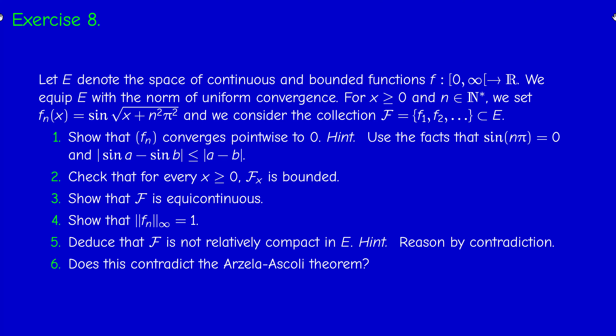We consider a sequence of elements in this set E defined by fₙ(x) = sin(√(x + n²π²)), and the collection F = {f₁, f₂, ...}. We have to show: (1) fₙ converges pointwise to zero; (2) F is pointwise bounded; (3) F is equicontinuous; (4) each fₙ belongs to the unit sphere of E; and finally, we have to deduce that F is not relatively compact in E, although it is pointwise bounded and equicontinuous, and explain why this does not contradict the Arzelà-Ascoli theorem.